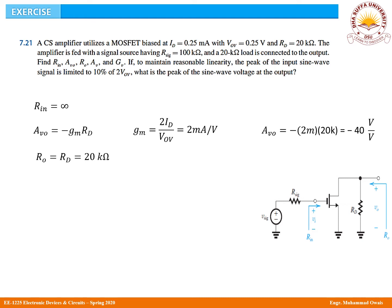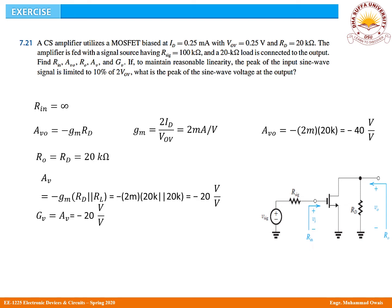For AV, you need to consider the load resistance as well. AV = -Gm·(Rd ∥ RL). Rd is 20 k, RL is 20 k, so the equivalent will be 10 kilo-ohms. So the voltage gain is -20 V/V. For GV, the overall voltage gain — since input resistance is infinite, GV equals AV. Therefore GV is also -20 V/V.